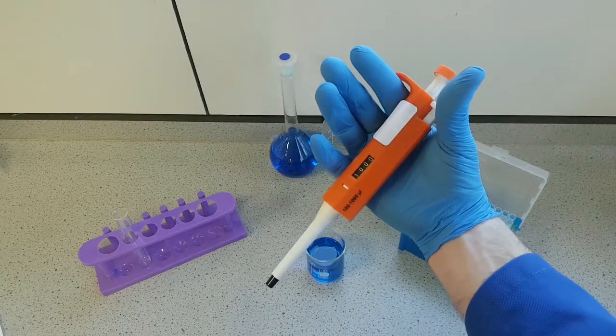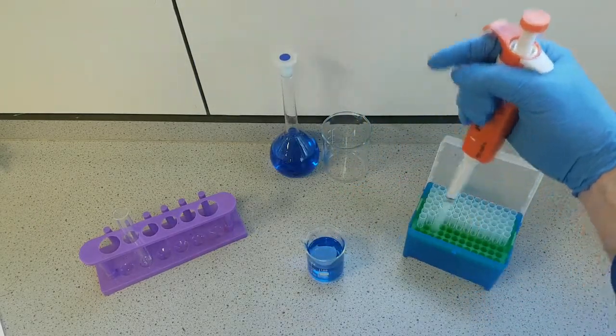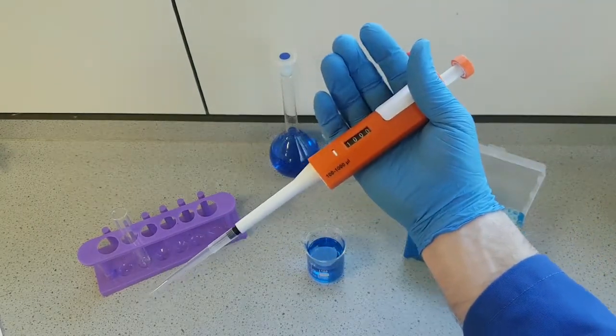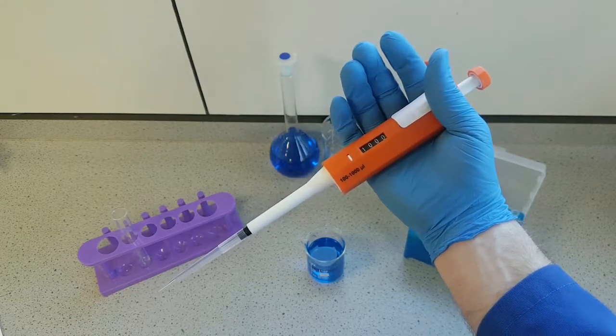Once we've set our pipette to the desired volume, we can now attach a disposable pipette tip. Make sure that you use a pipette tip that's suitable for the brand of pipette you're using, as well as for the correct volume.